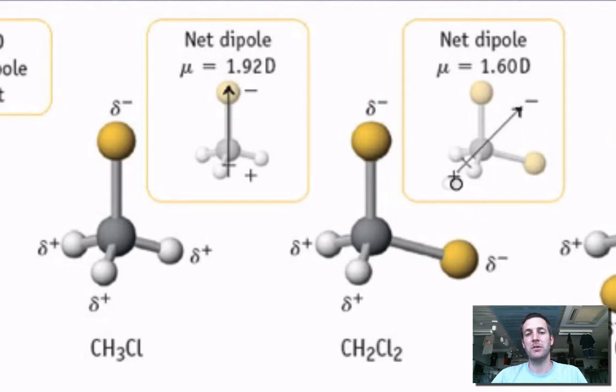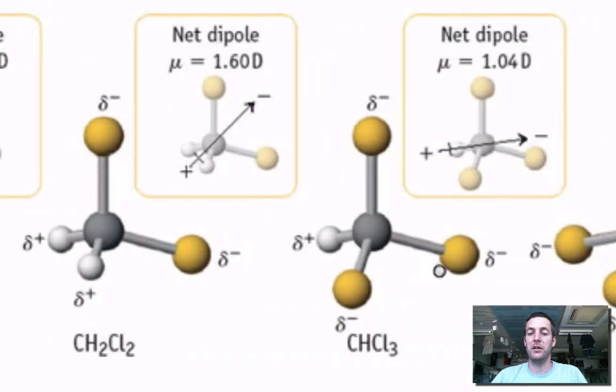If I had a third chlorine atom, then all these chlorines will become negative because they're better at attracting electrons than carbon and hydrogen, and the hydrogen will be slightly positive. And we can measure the dipole moment there as well. These figures are not important. It's just showing that there is an overall dipole, or in other words, overall the molecule is polar.